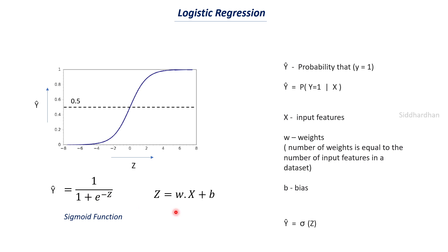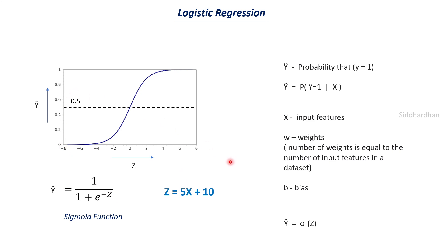Let us say we have a dataset, we have fitted it to our logistic regression model, and it has found the optimum weight and bias values. Let us say the weight value is 5 and the bias value is 10, and this example dataset contains only one input feature — so there is only one weight value of 5 and a bias value of 10. This is just an example; I am not saying these are the values you will get every time. Once the model is trained with these parameters, for any new x value we can substitute it into the z equation to get z, and then compute y-hat.